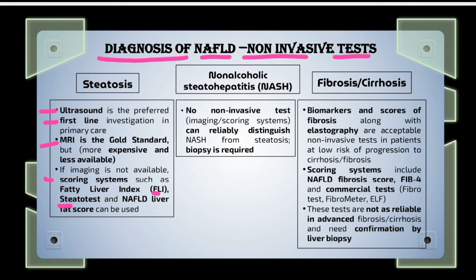In the case of non-alcoholic steatohepatitis, no non-invasive test can reliably distinguish NASH from steatosis, so liver biopsy is required for confirmation of diagnosis. For diagnosis of fibrosis and cirrhosis, biomarkers and fibrosis scores along with elastography can be used where there is low risk of progression. Scoring systems like NAFLD fibrosis score, FIB-4, and commercial tests like FibroTest, Fibrometer, and ELF can be used. However, these are less reliable in advanced fibrosis and cirrhosis, where liver biopsy becomes the ultimate method.